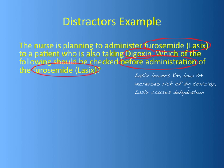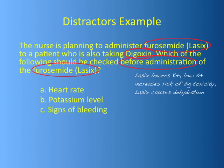Now look at the answers: check the heart rate, check the potassium level, check for signs of bleeding, check level of consciousness. Right away mark off signs of bleeding and level of consciousness. This is a great example of distractors — you know that when giving digoxin you must check the heart rate, but this question asks about giving Lasix. You circled Lasix, and you wrote about potassium — so that directly leads you to the answer: check the potassium level.